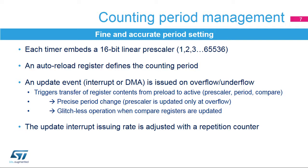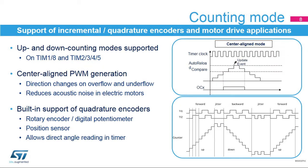Some STM32 timers feature up-down counting modes: the advanced control timers 1 and 8, and the general purpose timers 2, 3, 4, and 5. The counting direction can be programmed by software or automatically managed by the timer in center-aligned PWM mode. In this mode, the counting direction changes automatically on counter overflow and underflow. For a given PWM switching frequency, this mode reduces acoustic noise by doubling the effective current ripple frequency, providing the optimum tradeoff between switching losses and noise.